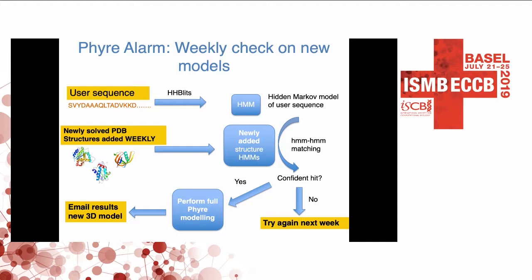In that case, we have FIRE Alarm. When we don't find a template, your user sequence is submitted and we run HHblits to generate a sequence hidden Markov model. Then every week when new structures are added to the Protein Data Bank, we update our database of structure-based hidden Markov models and search to see if there's anything new for your sequence. Hopefully one day there will be a match, and we perform the full FIRE modeling and the user gets an email that results are available. If there isn't a match, this continues week after week.